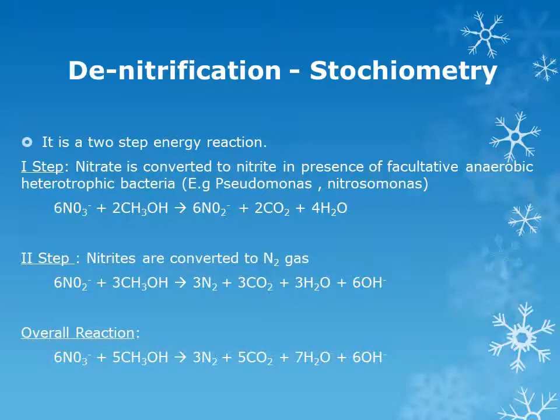The denitrification process is also a two-step energy reaction. In the first step, nitrates are converted to nitrites in the presence of facultative anaerobic heterotrophic bacteria like Pseudomonas or Nitrosomonas — 6 molecules of nitrate react with 2 molecules of methanol to form 6 molecules of nitrite. Since the nitrite formed is unstable, in the second step 6 molecules of nitrite combine with 3 molecules of methanol to form 3 molecules of nitrogen gas. Thus, the overall reaction converts nitrates to nitrogen gas in the presence of methanol.